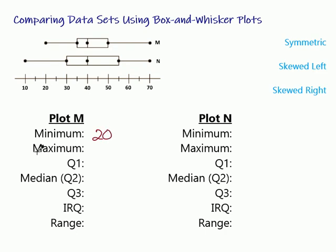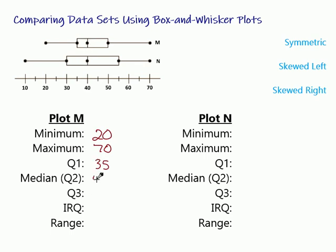Then if we look for the maximum, go to the other end — we're at 70, so the maximum is 70. Then Q1, which stands for the first quartile. That is the point on the left side of the box, and for this one it's going to be at 35. Then we have the median, sometimes referred to as the second quartile — median is the middle. That's this point right here, which is located at 40.